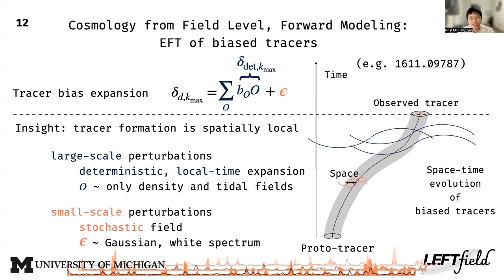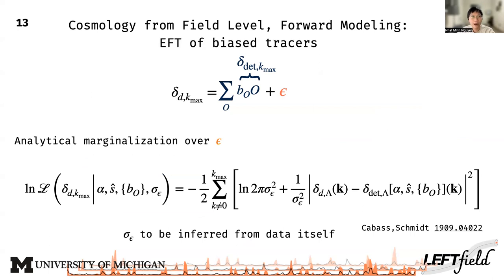Recall that we must marginalize over the small-scale noise epsilon in our analysis. Assuming it is Gaussian white noise, we can do so analytically and end up with a Gaussian likelihood expressed in the Fourier basis. The amplitude of the noise component sigma_epsilon is to be inferred for each clustering sample we analyze.